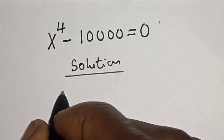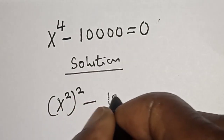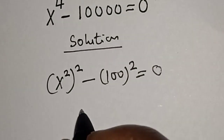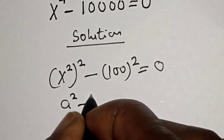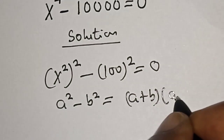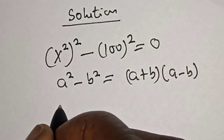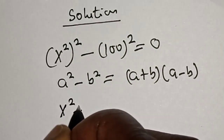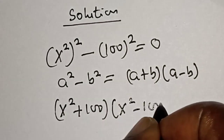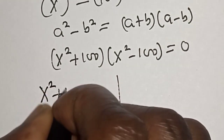Solution: s raised to power 4 can be written as (s squared) squared, and minus 10,000 can also be written as 100 squared. If we check this, this is a difference of two squares — that is, a squared minus b squared equals (a plus b)(a minus b). Now let's substitute: our a is s squared and our b is 100. We have (s squared plus 100)(s squared minus 100) is equal to 0.